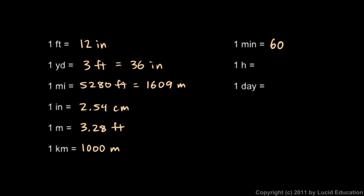1 minute is 60 seconds. 1 hour is 60 minutes, and that's equal to 3,600 seconds.